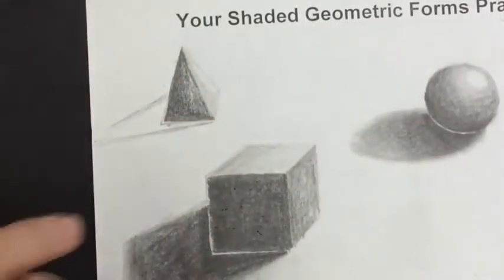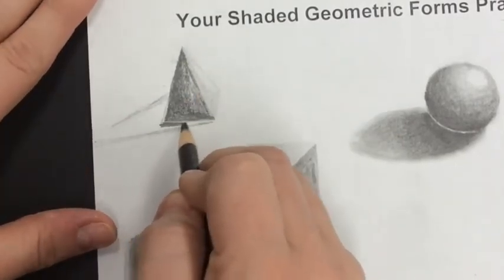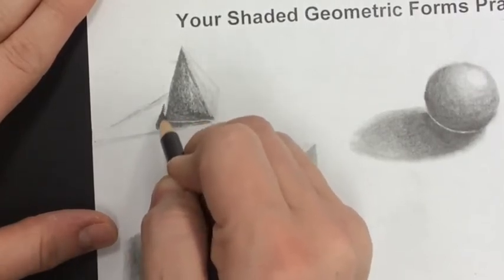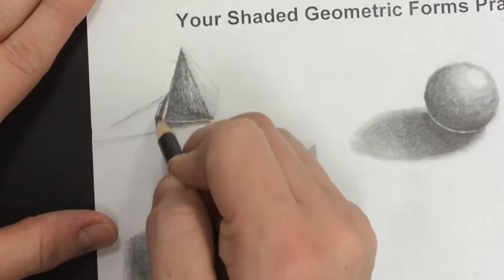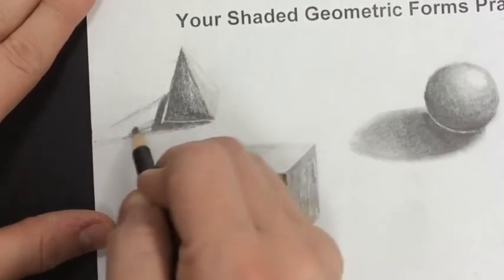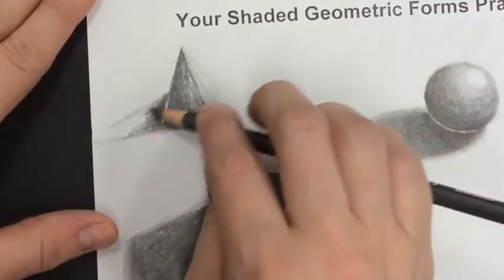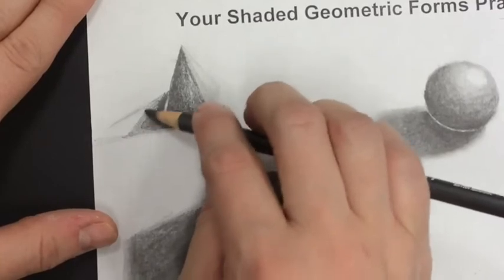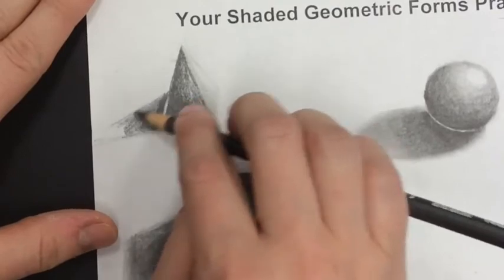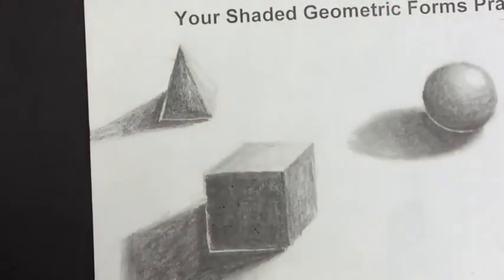And then next, I'm going to take my ebony and shade right under the object there, right next to the object, giving me my darkest cast shadows. And I'm going to start to lighten my pressure to give me dark to mid-tones, and then to my lightest values. So there's my cast shadow.